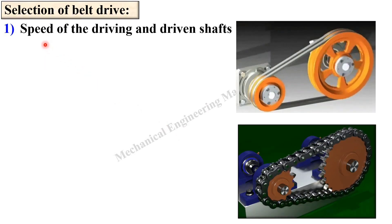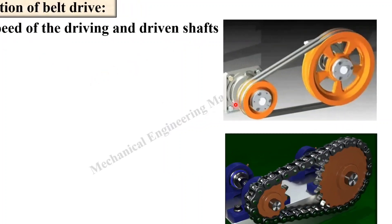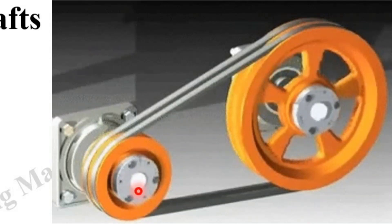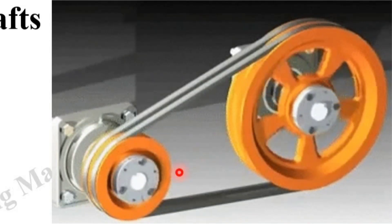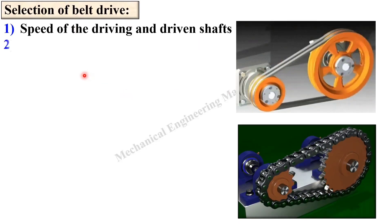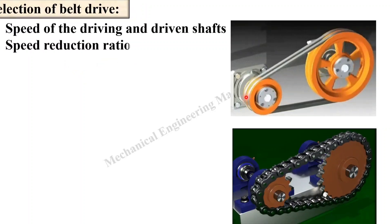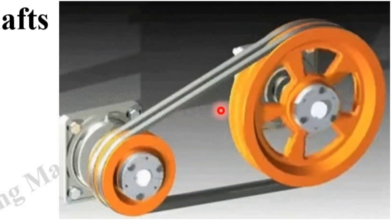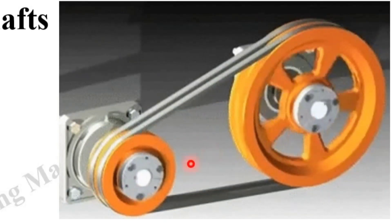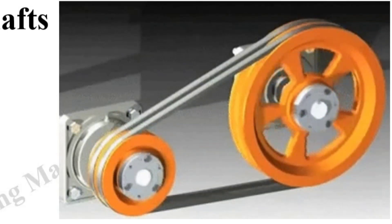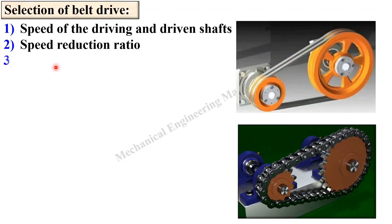Selection of belt drive depends on a number of parameters. First, speed of the driving and driven shafts — if you consider this as input it is called the driving shaft and the other is the driven shaft. Based on that you can select the belt drive. Next is speed reduction ratio — here the speed reduces approximately by half because the diameter is almost double, and that is also one parameter to select the belt drive.